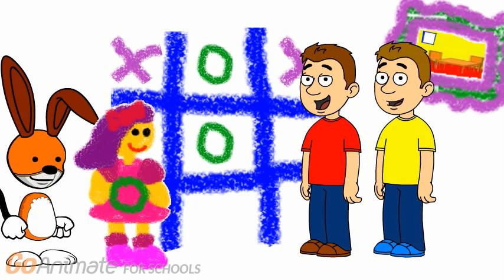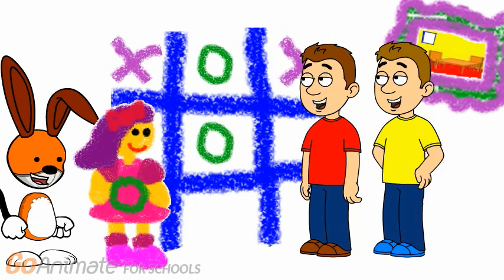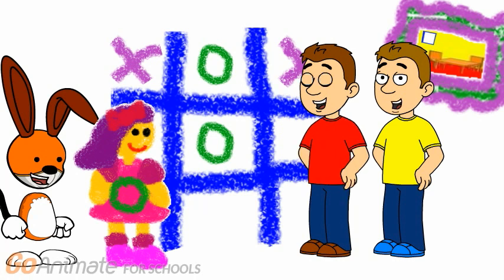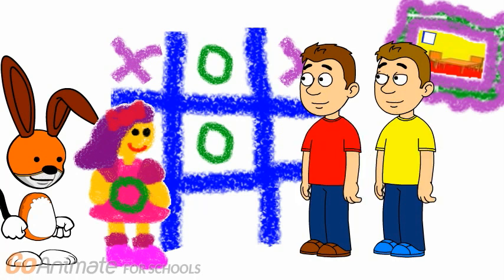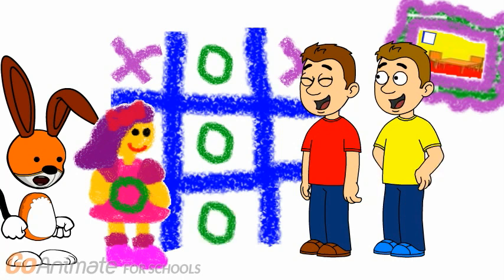Right there. On the bottom. Oh, yeah. She has to put her O on the bottom to get three O's in a row. Okay. So I gotta put my O right here. And just like that, you get three O's in a row.